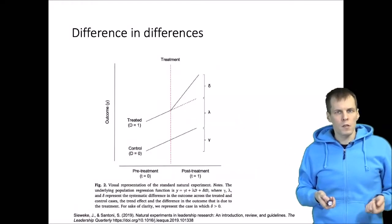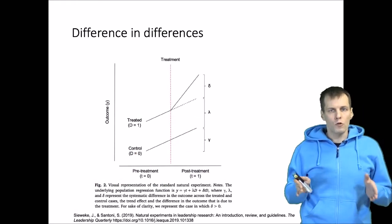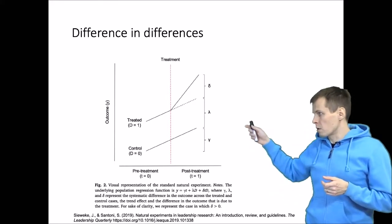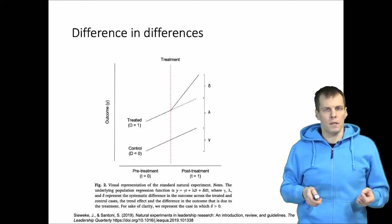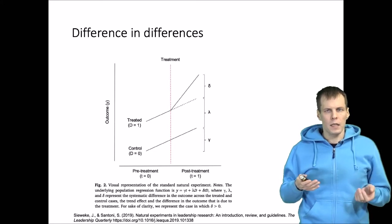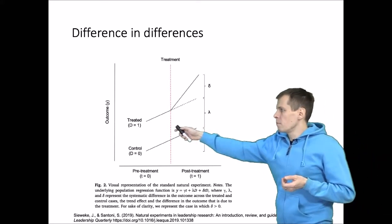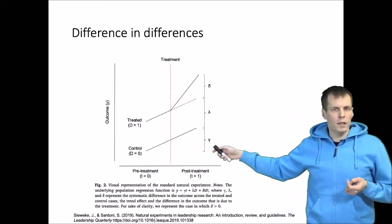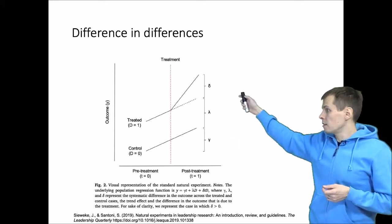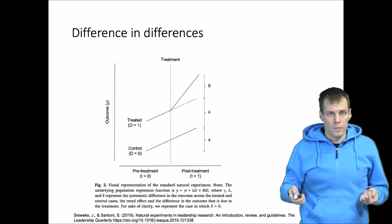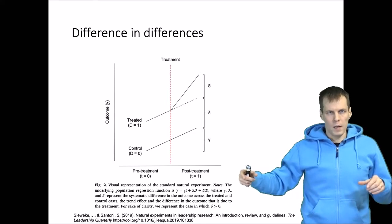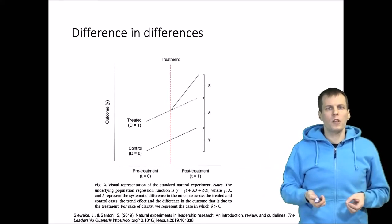How difference in differences works: we measure both groups before and after the treatment, and no randomization is required. We first calculate the difference between groups before the treatment, then after the treatment, and the difference in those differences — delta — is the causal effect. If the gap between treatment and control grows after treatment, we conclude the treatment had a positive effect.